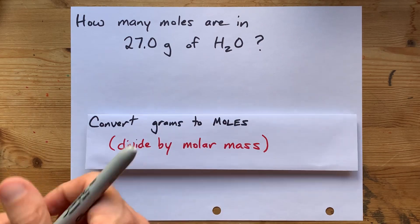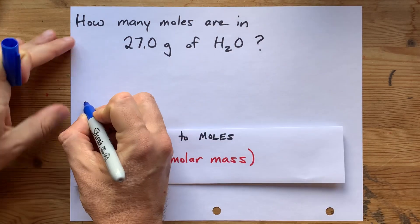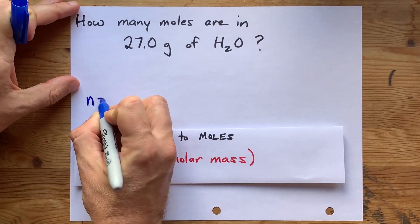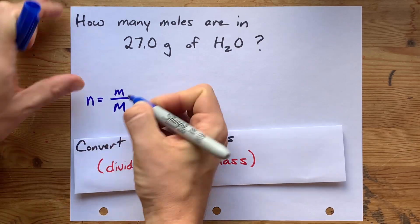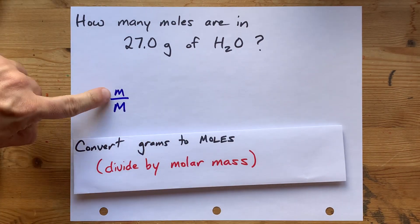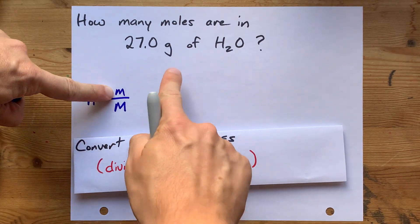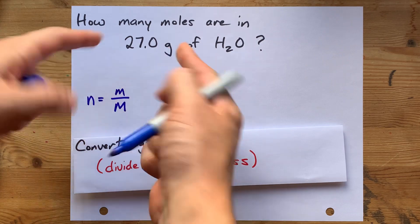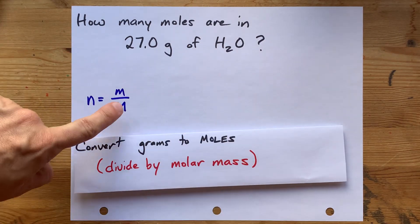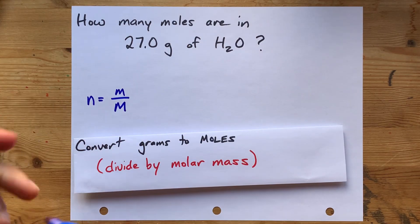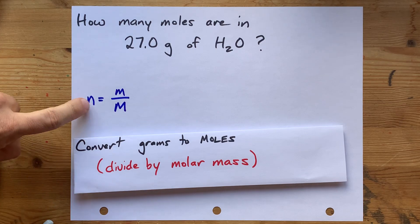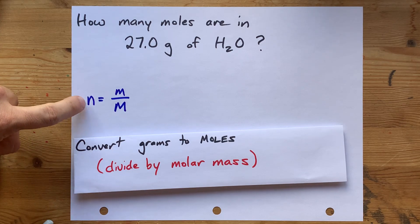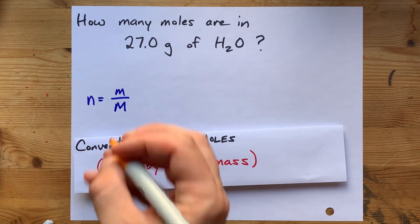The formula is: number of moles equals mass divided by molar mass. You were given m (little m), grams, mass — but you don't yet have capital M, which is the molar mass of the compound. We are being asked for the number of moles, little n.